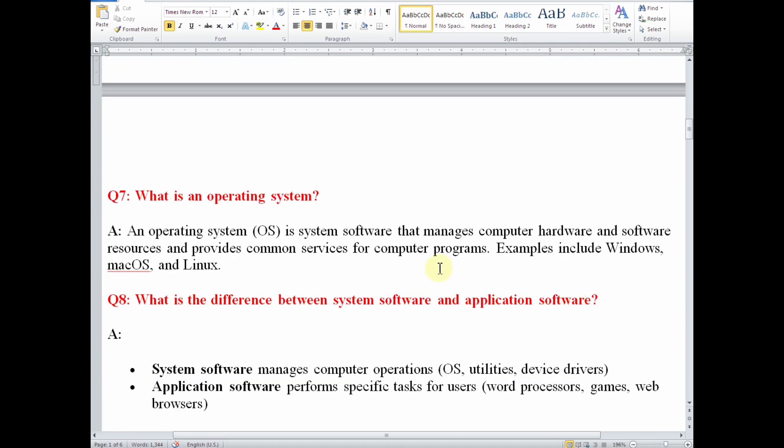Number seven, what is an operating system? An operating system is system software that manages computer hardware and software resources and provides common services for computer programs. Examples include Windows, Mac OS, Linux, and others.